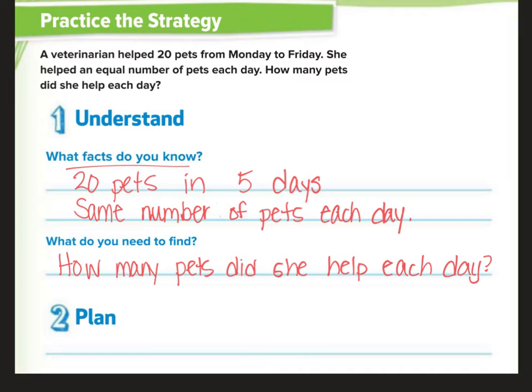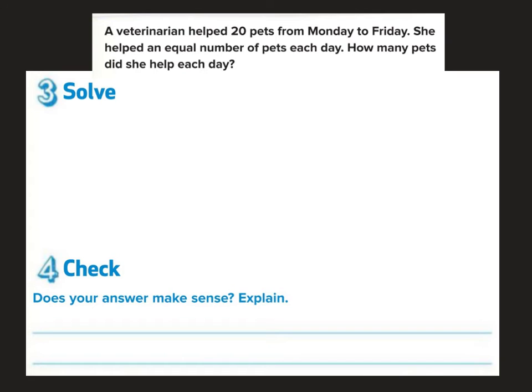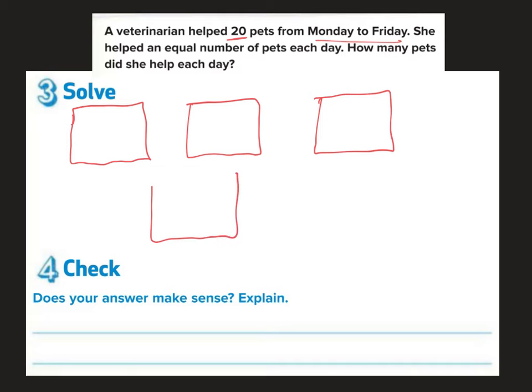Our plan is we need to divide. I need to take 20 pets divided among 5 days to see how many pets she helped each day. Okay, so here we go. If I have 20 pets in 5 days, I'm going to make 5 groups. 1, 2, 3, 4, and 5.